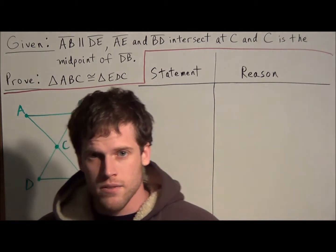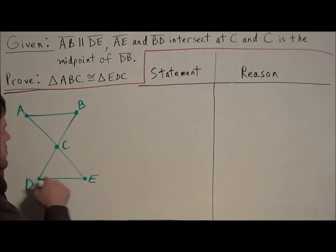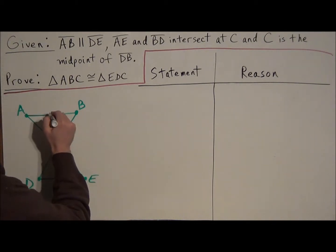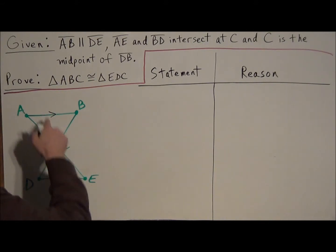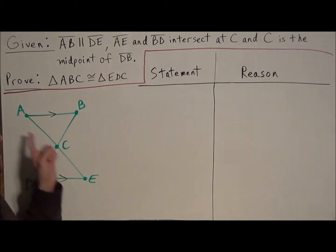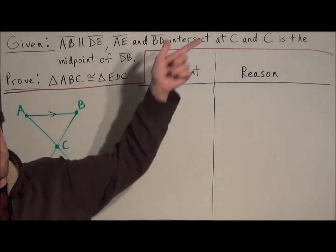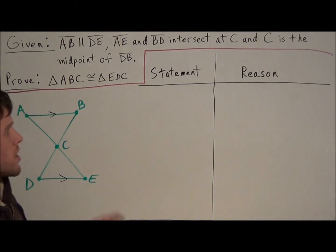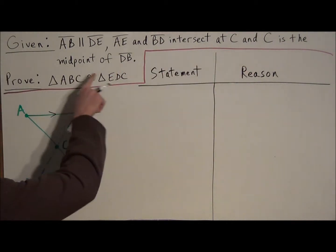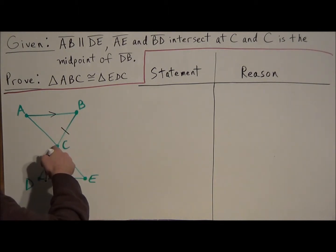The first thing we should do with any triangle proof is mark up the diagram based on the given information. AB is parallel to DE, so we draw two arrows going in the same direction to indicate that. We're also told AE and BD intersect at C. And since C is the midpoint of DB, that means DC is congruent to BC — the midpoint separates the segment into two congruent pieces.